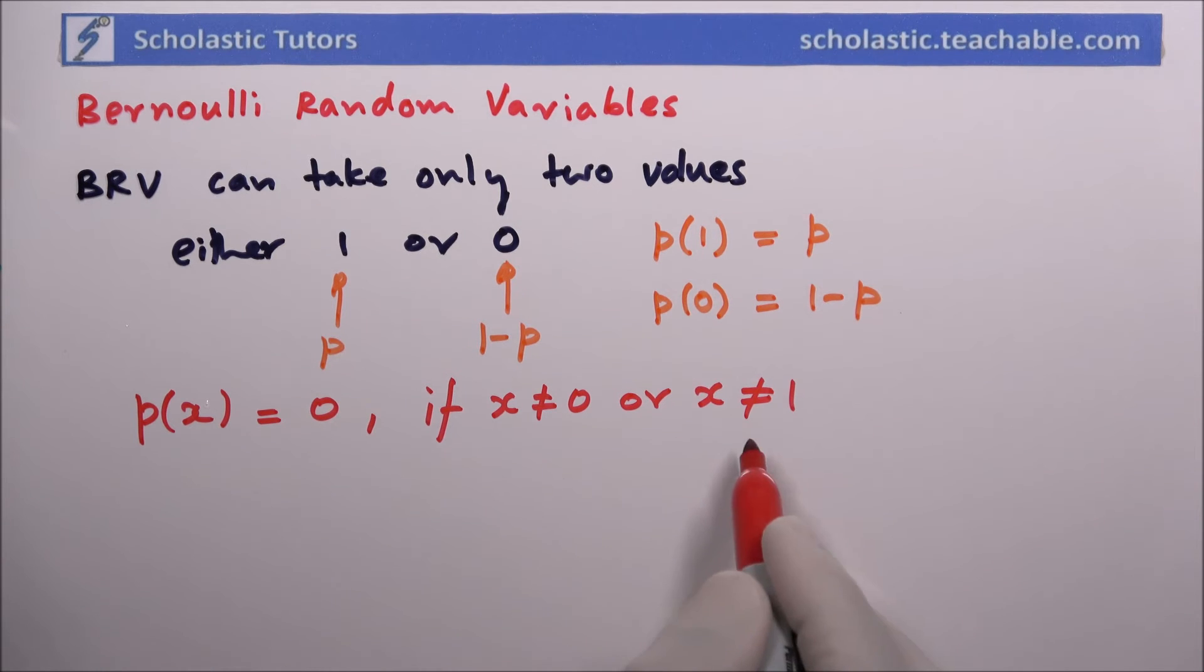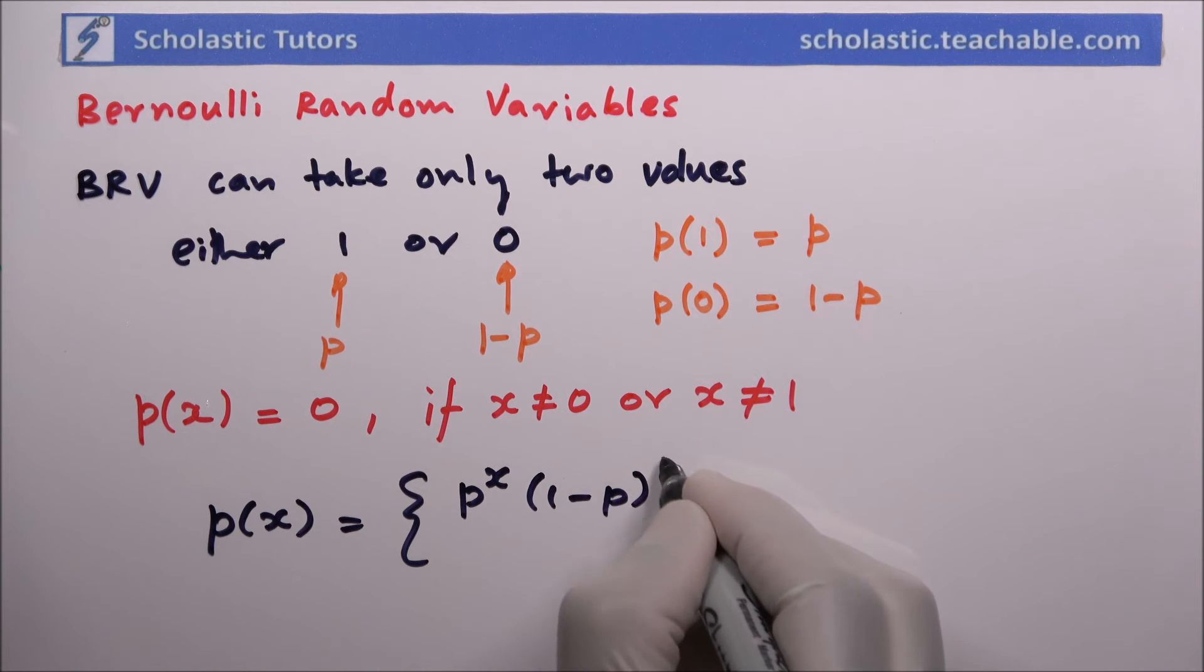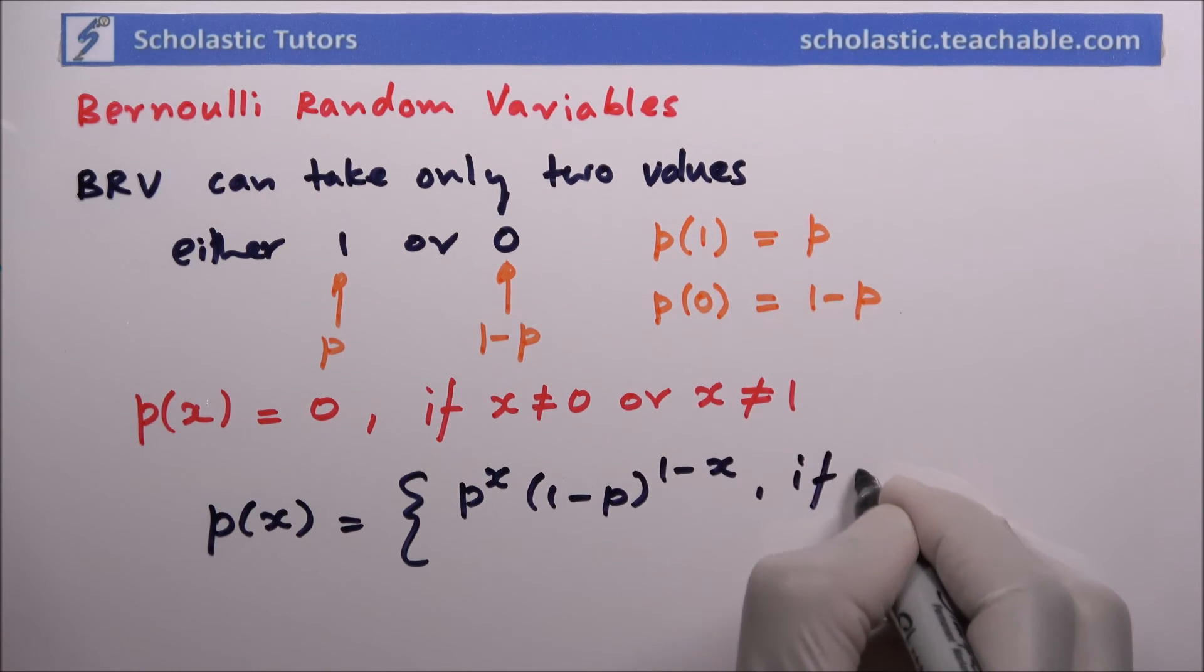We can write an equation: the probability mass function p(x) equals p to the power x times one minus p to the power one minus x, if x equals zero or x equals one.